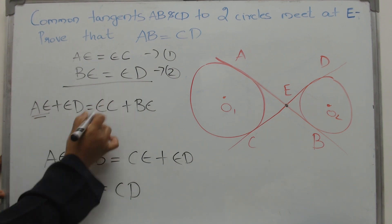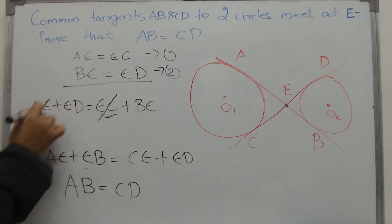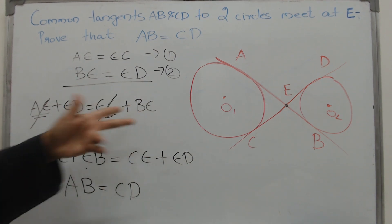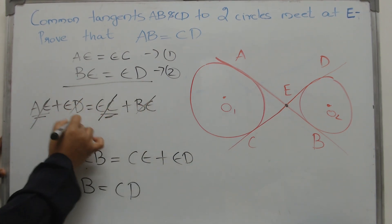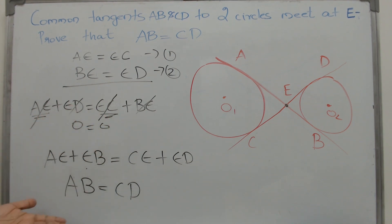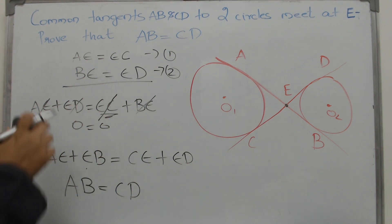AE and CE are equal. They will get cancelled. ED and BE are equal. They will get cancelled. So this equation is also correct. But this is not what we want.